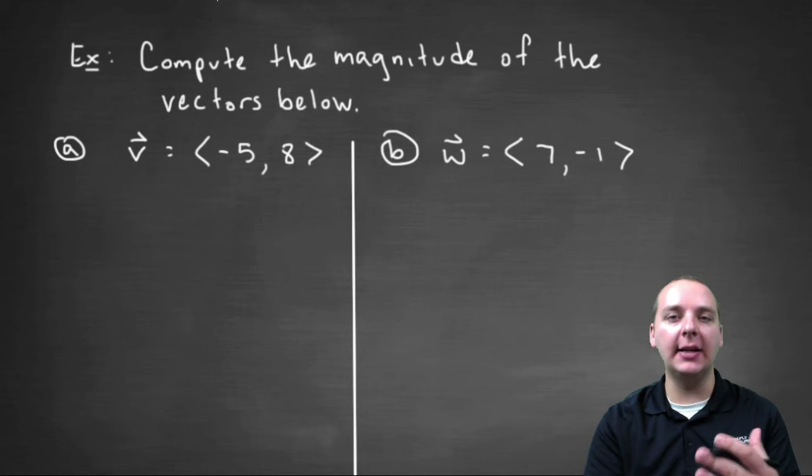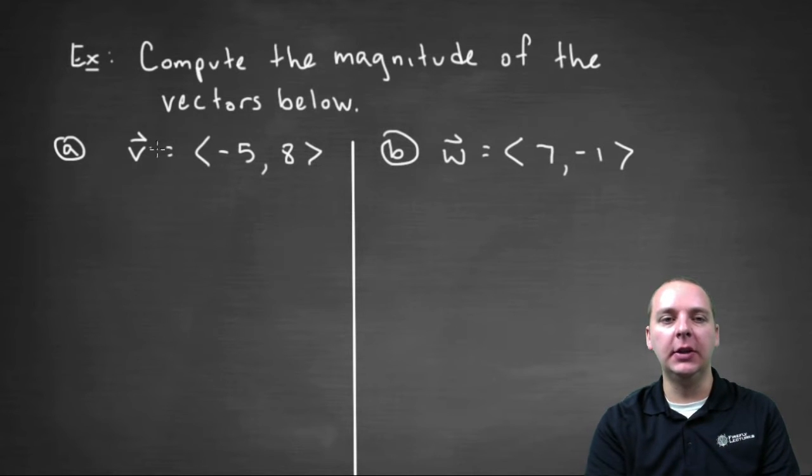Let's see if we can compute the magnitude, which is also known as the norm or the length of these two vectors listed right here. So we'll start with vector v, which is the vector negative five comma eight.